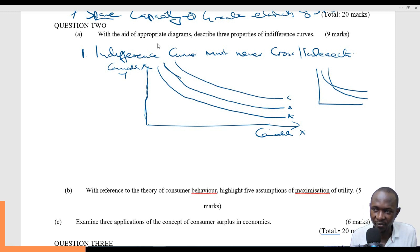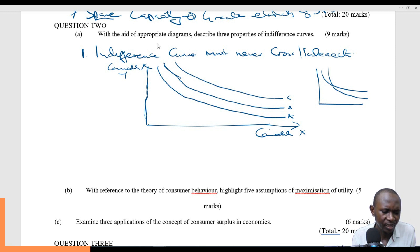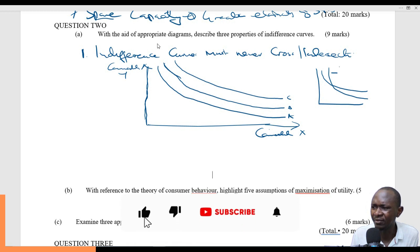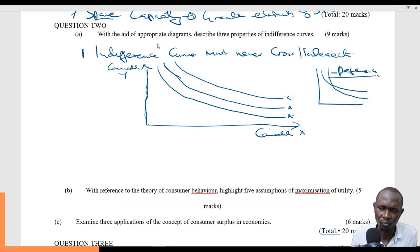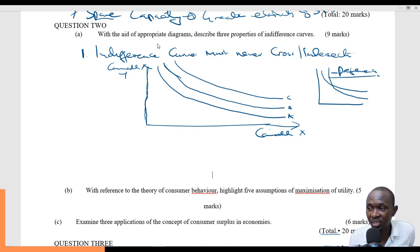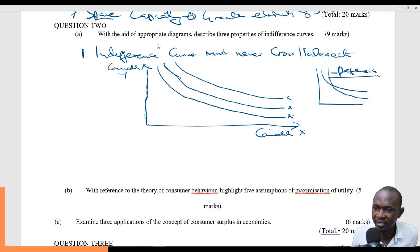That is one of the properties of indifference curves. Should it happen, it will create a lot of ambiguity as to what the true utility is, because individuals are assumed to have a clear set of preferences. When one indifference curve crosses the other, it creates confusion on what the true utility of that particular individual or product is. So the first rule is that indifference curves must never cross or intersect.